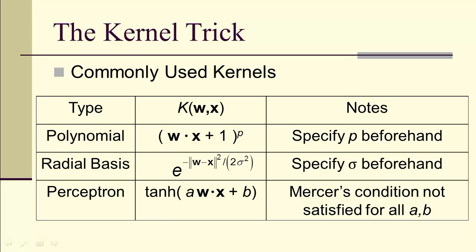There's also one that's related to what's called a neural network, we'll see a little bit later, called the perceptron kernel, which is the hyperbolic tangent of a times w dot x plus b. And here, if you're going to use that, you'll have to check and make sure Mercer's condition is satisfied, because it's not satisfied for all a and b.